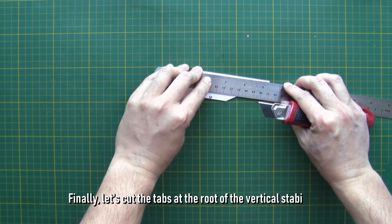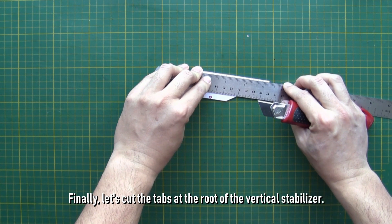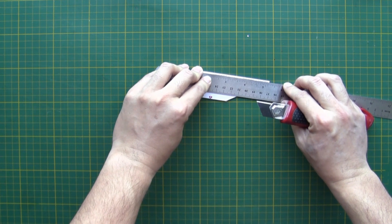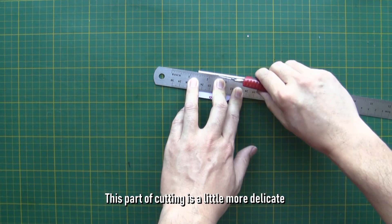Finally, let's cut the tabs at the root of the vertical stabilizer. This part of cutting is a little more delicate.